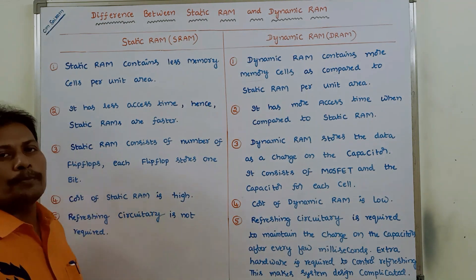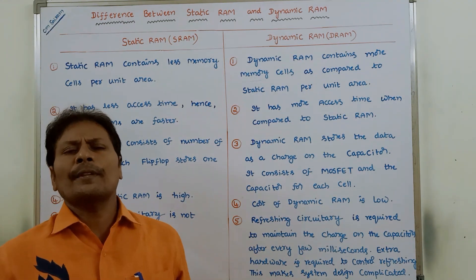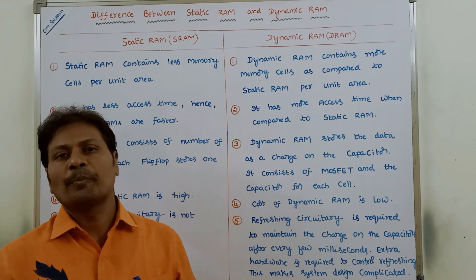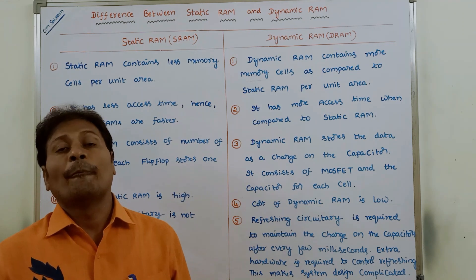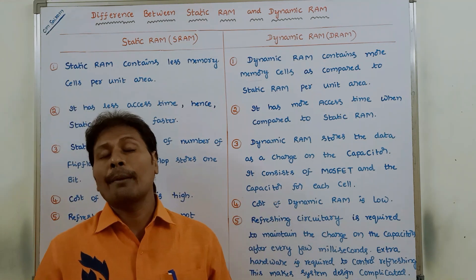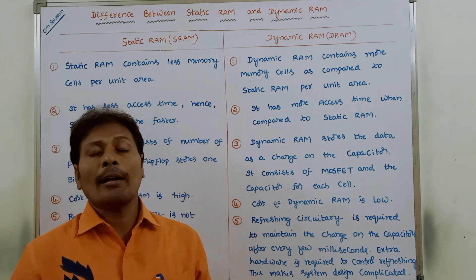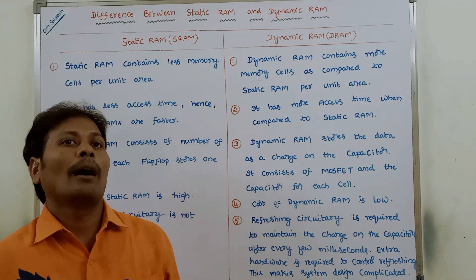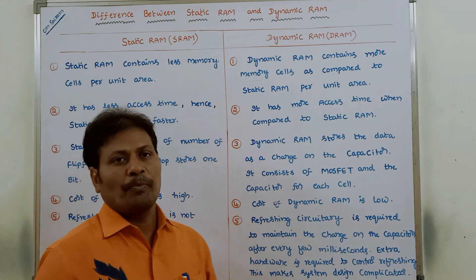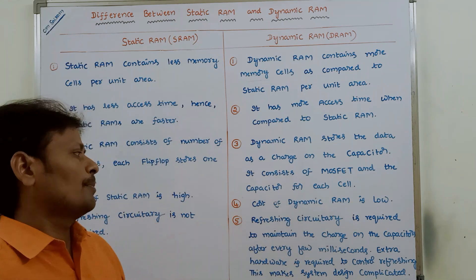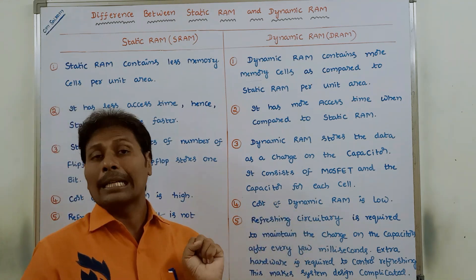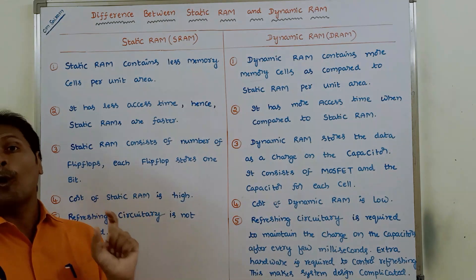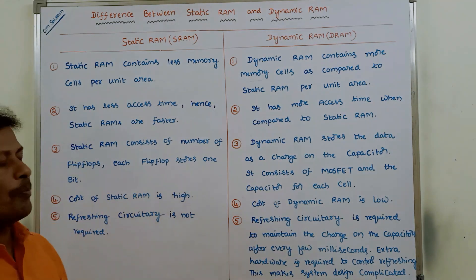The fourth difference is cost. The cost of static RAMs is high. Whereas in the case of dynamic RAM, the cost of dynamic RAMs is lesser. So dynamic RAMs have lower cost and static RAMs have higher cost.